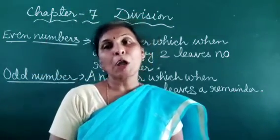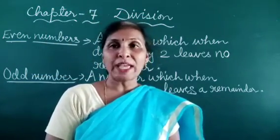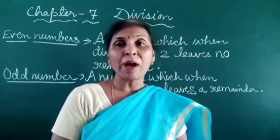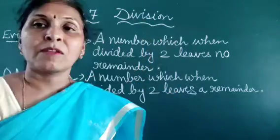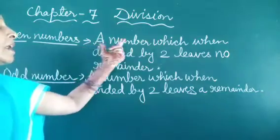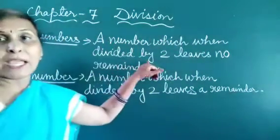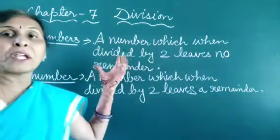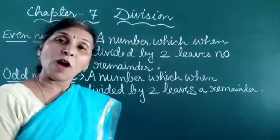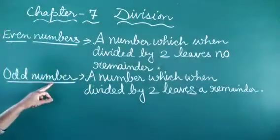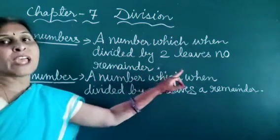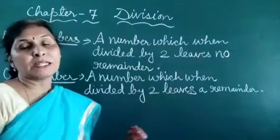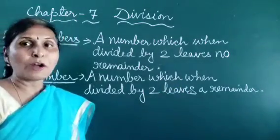Good morning dear students. Today I am going to explain whether numbers are even or odd by division method. A number which when divided by 2 leaves no remainder is called an even number. A number which when divided by 2 leaves a remainder is called an odd number.